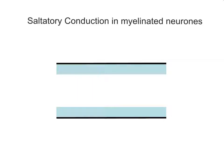Saltatory conduction is the scientific name given to the way that the action potential passes along the length of the axon down this neuron.